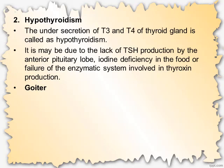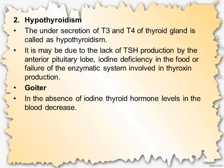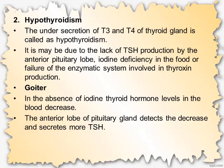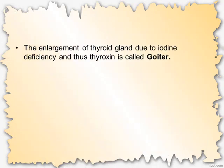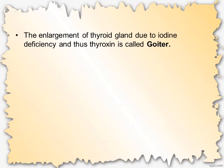Goiter is a cause of hypothyroidism. In the absence of iodine, thyroid hormone levels in the blood decrease. The anterior lobe of the pituitary gland detects the decrease and secretes more thyroid stimulating hormone in response. The excess TSH over-stimulates the thyroid gland, causing it to enlarge in size. This enlargement of the thyroid gland due to iodine deficiency is called goiter.